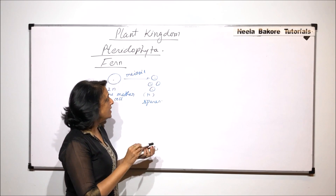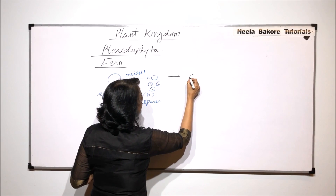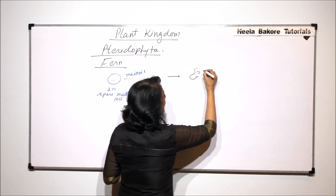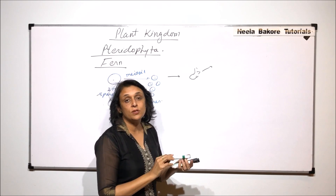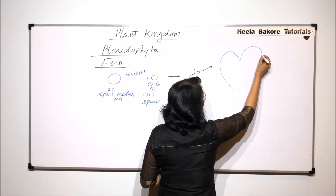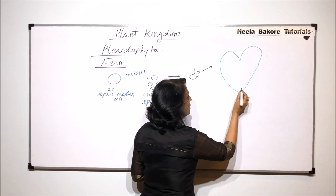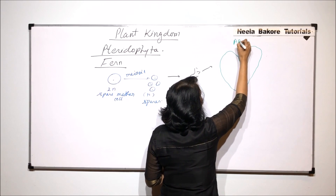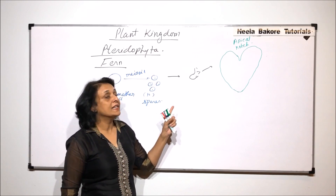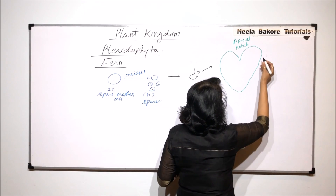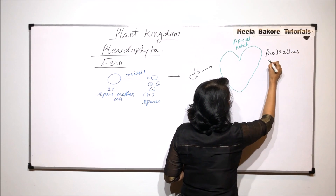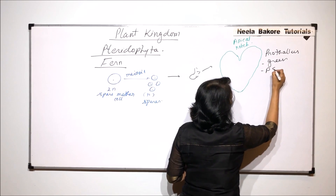Now when the spore germinates, initially we find that there is a tiny structure — the spore has germinated and some thallus-like structure is formed and very soon this thallus-like structure takes the heart shape. There is a depression here called the apical notch and it looks like a heart shape. This is called the prothallus and this prothallus is green and it performs photosynthesis.